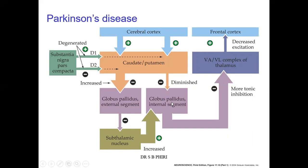When the direct pathway is not properly stimulated, the globus pallidus internal segment won't be inhibited — there will be less inhibition of it. This GPi segment is inhibitory and will inhibit the thalamus. Once the ventral lateral and ventral anterior complex of the thalamus is inhibited, those neurons won't fire to stimulate the cortex, resulting in less movement — hypokinesia or bradykinesia.